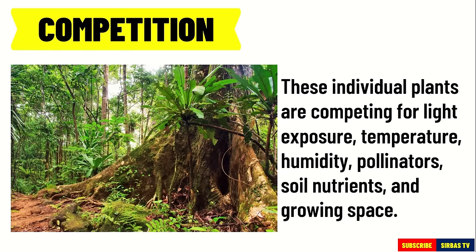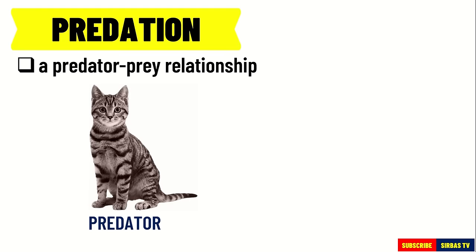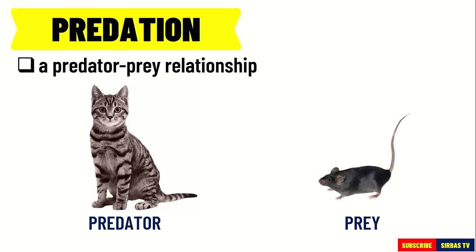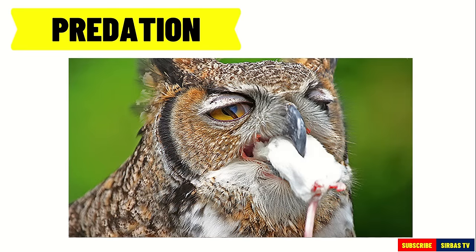Another non-symbiotic relationship is called predation — it is a predator-prey relationship. The predator is an organism that feeds on another organism called prey, and the process of consumption involves the killing of the prey. Carnivorous animals such as frogs, snakes, owls, and eagles kill and eat other animals that are rich in proteins and fats.